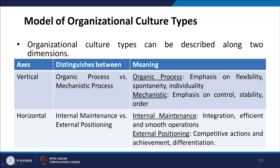There are various types of organizational cultures described along two dimensions. The vertical axis distinguishes between organic processes versus mechanistic processes. The horizontal axis moves from internal maintenance to external positioning. Organic processes emphasize flexibility, spontaneity, and individuality; mechanistic processes emphasize control, stability, and order. Internal maintenance means integration and smooth operations, while external positioning means competitive action and differentiation.